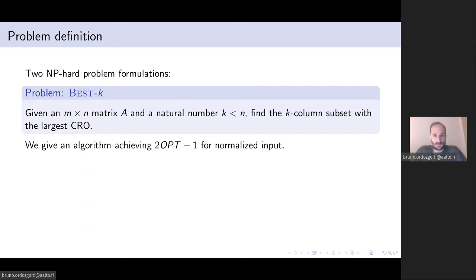We propose two problem formulations. The first one is: given a matrix A and a number K, find the K column subset with the largest CRO. And for this problem which we showed to be NP-hard, we give an algorithm achieving quality guarantees with respect to the optimal CRO, the optimal subset in the matrix. And this guarantee works when the columns of the input matrix are scaled to unit norm.